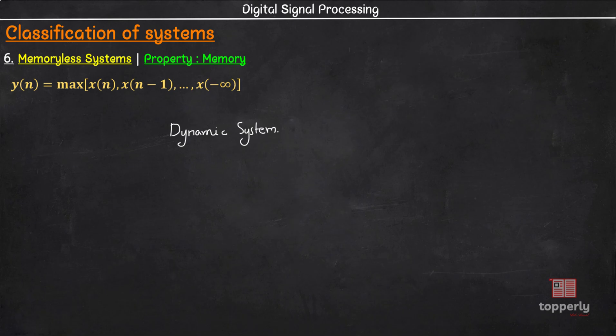Now, the third system we have is y(n) = x(-n). Let us analyze the system. Setting n = 0, we have y(0) = x(0). So, present output depends on present input here. Let us see what will be the output in the case of n = 1. We have y(1)